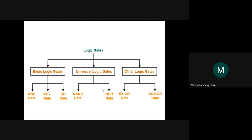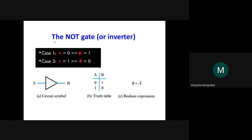The basic gate is very important: AND, NOT, and OR. NOT is just the complement of the input. Suppose the input A is equals to zero, then output B is equals to one. Just the complement: zero to one or one to zero.